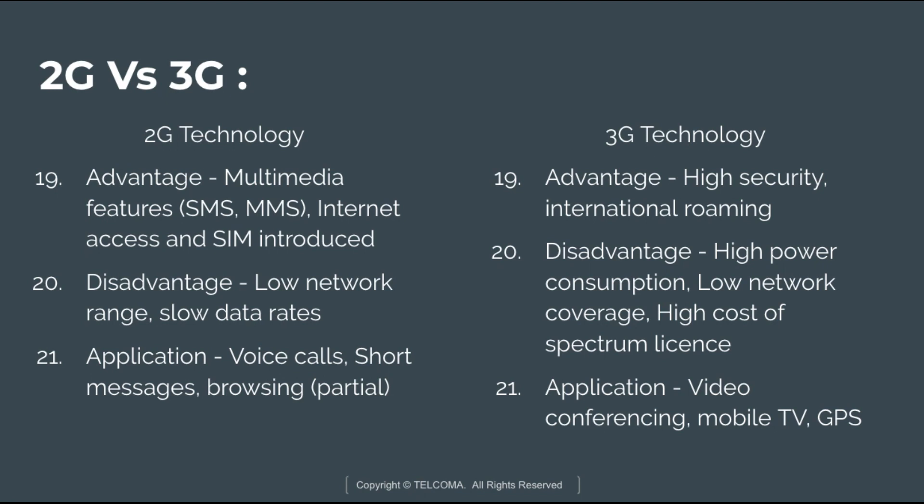The disadvantage of 2G technology is that it has a low network range and provides a slow data rate. The disadvantages of 3G technology are that it consumes high power, has low network coverage, and also has a high cost of spectrum licensing.